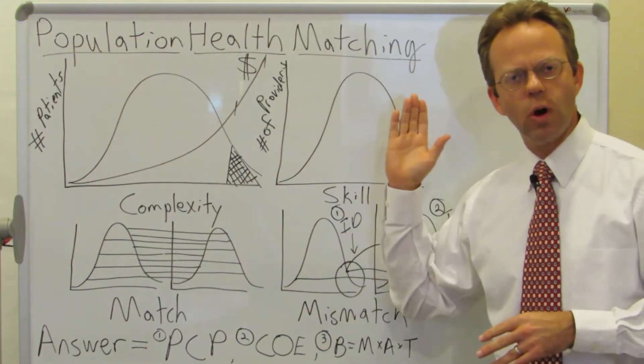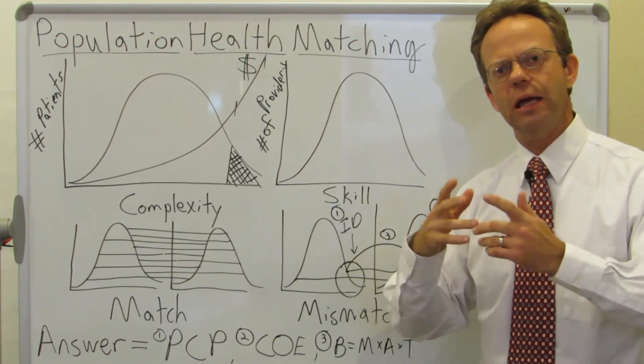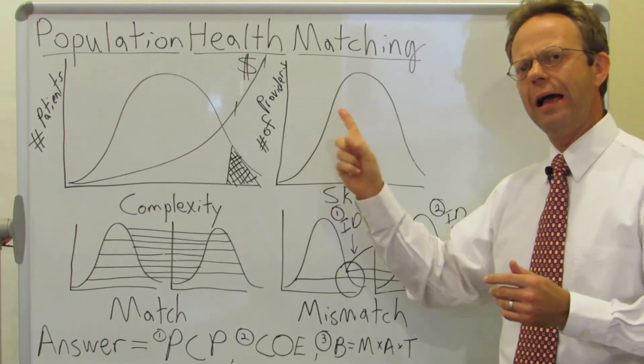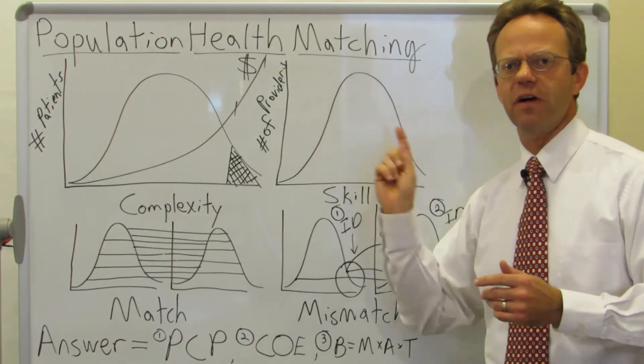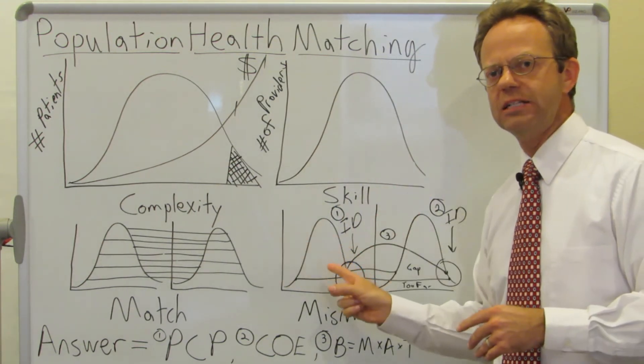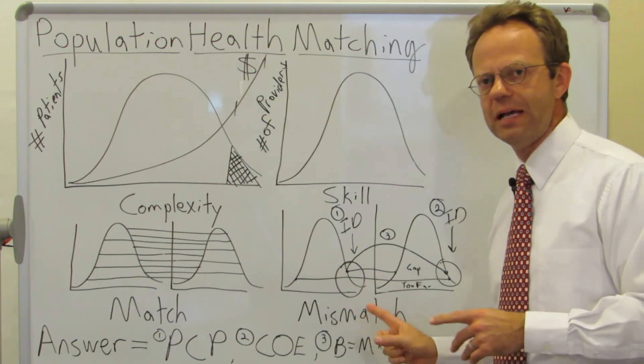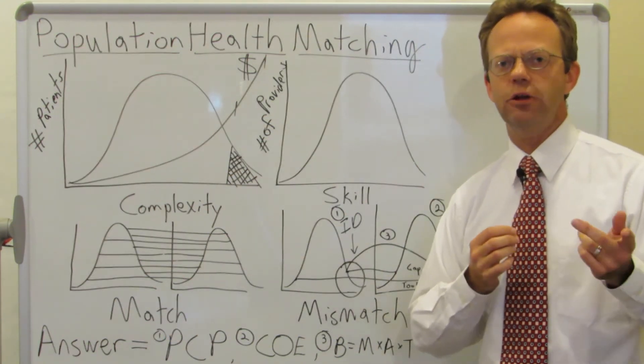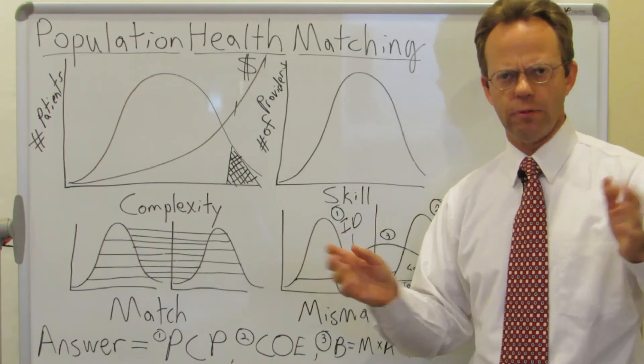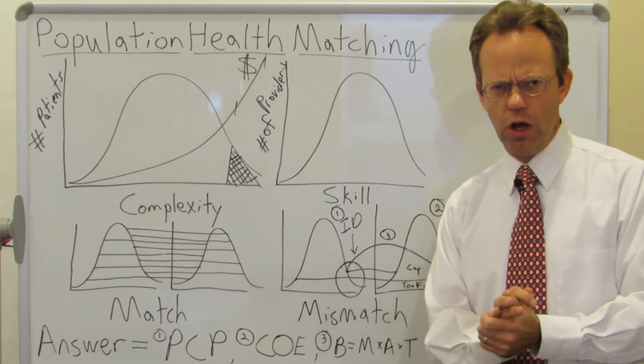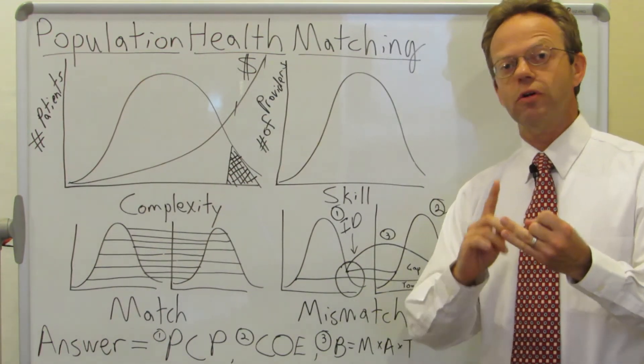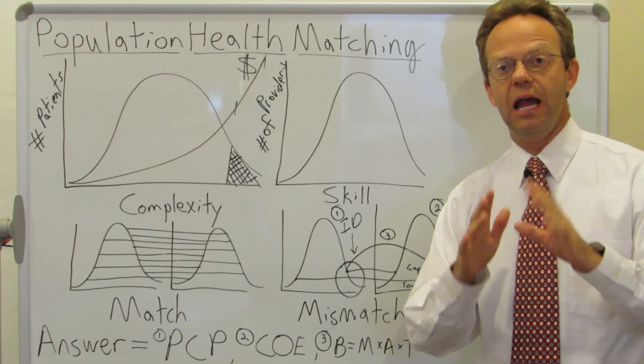And then you have physician scorecarding and doing analytics on the provider claims. So let's say you could absolutely map exactly where each provider was on there. At the end of the day, if you can't change this mismatch into that match, which is the behavior modification, if you can't do that, it's all for naught, right? It's all just an academic exercise. So using either a pilot program approach or starting small and just to say, hey,